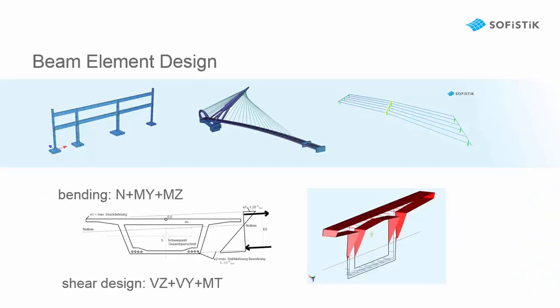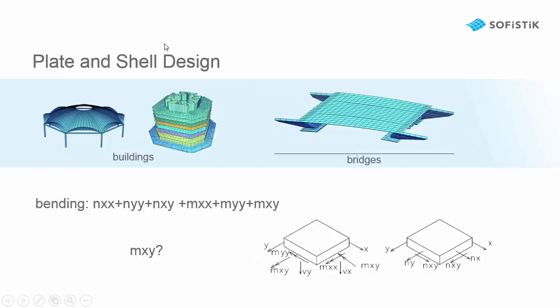If we first look to beam elements, we have frames and bridges. On bridges, we usually have a beam element because the design codes are mainly focused on them. The bending is not so difficult, normal force into bendings for a biaxial bending, but the shear is more complicated because we have additionally the torsional moment.